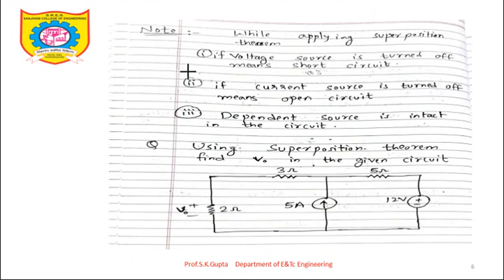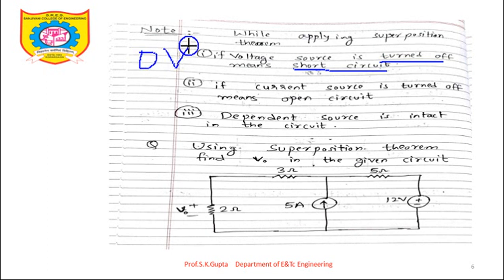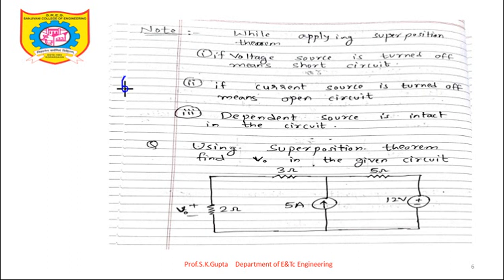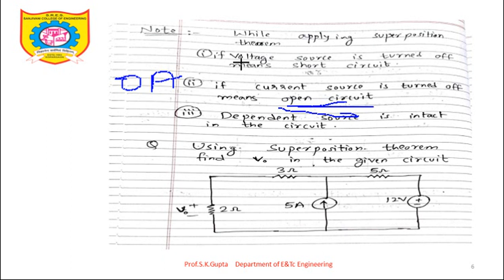Before the numerical, a few notes: if a voltage source is turned off, it is replaced by a short circuit, because a turned-off voltage source means 0 volts, and 0 volts means short circuit. If a current source is turned off, its current value is 0 ampere, which means open circuit — only if it is open circuit do we get 0 ampere. So: voltage source turned off → short circuit; current source turned off → open circuit.